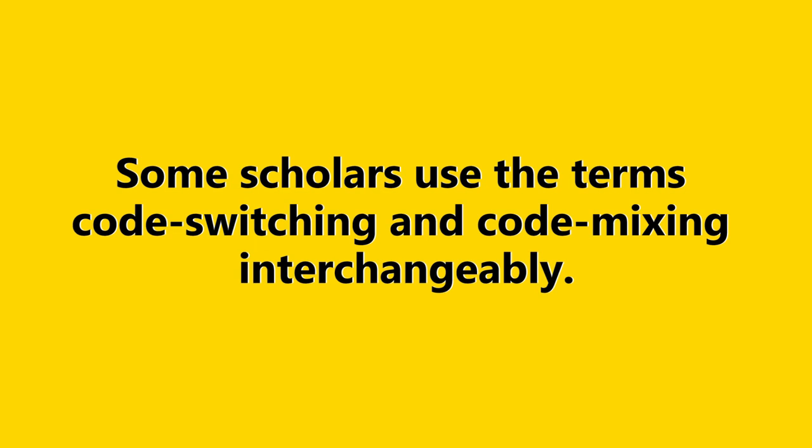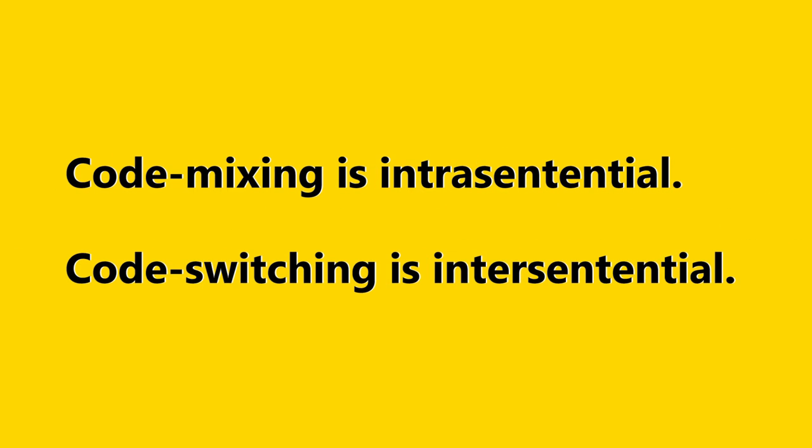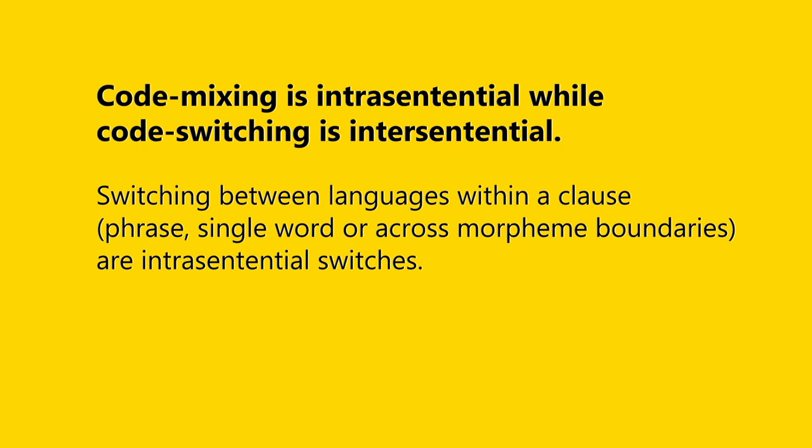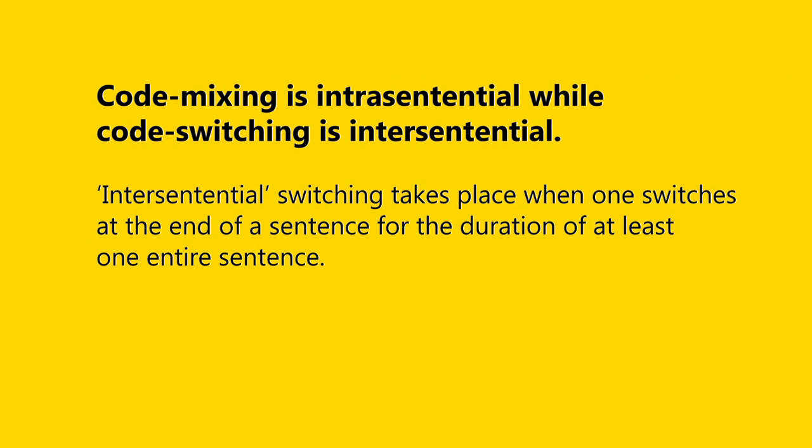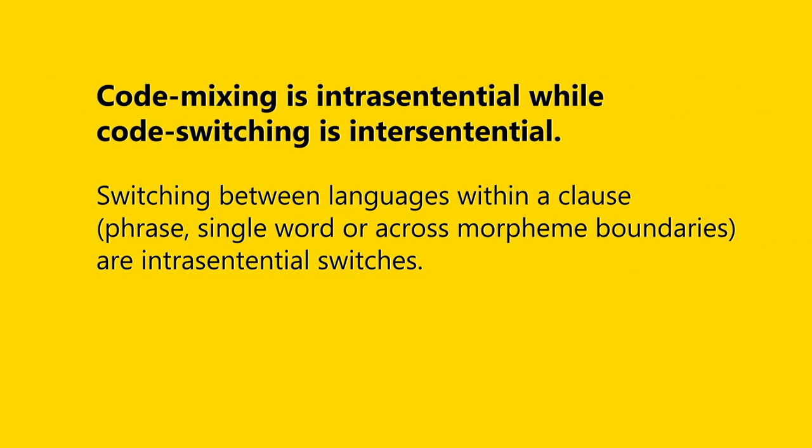Although some scholars use the terms interchangeably, there is a distinction. Code mixing is intrasentential — switching between languages within a clause, which includes phrases, single words, or across morpheme boundaries. Code switching is intersentential — one person switches at the end of a sentence, completing at least one entire sentence in one language before switching to another language for the next sentence. In code mixing, you mix words and phrases from one language into sentences of another language.